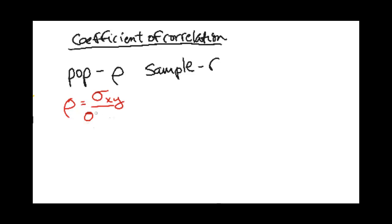So, because we're talking about the population, after the sigma. If I'm looking for R, it's the covariance of the sample.